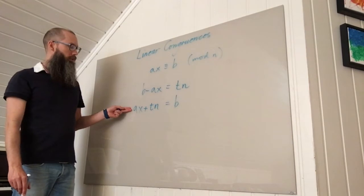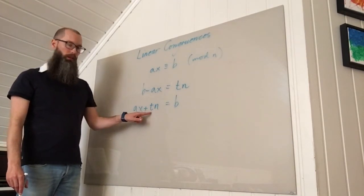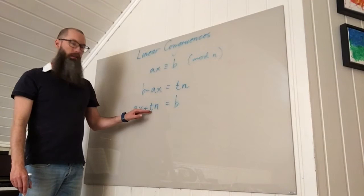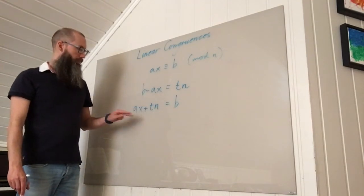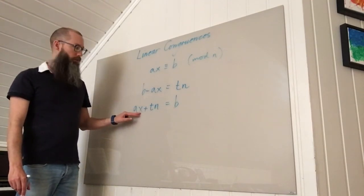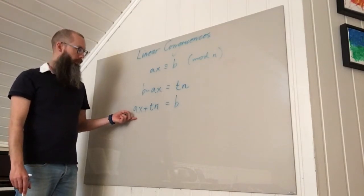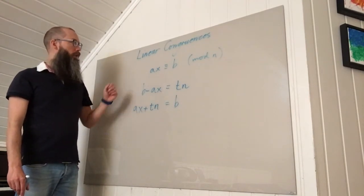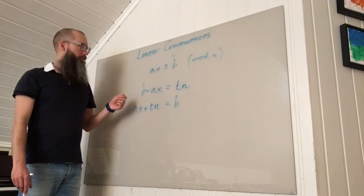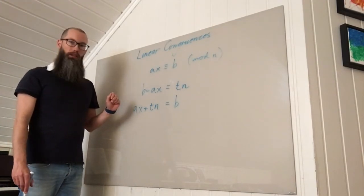So this is a Diophantine equation in two variables, and I'm only interested in the values of x, not the values of t. I just have to know that the t exists, but I'm only interested in the x values. So I could solve this as a Diophantine equation, but I'm going to use the techniques we developed in the last video on modular arithmetic to solve it.